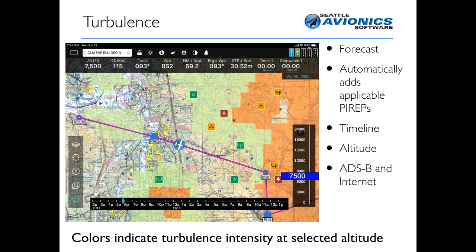Turbulence — especially this time of year — is really important. Turbulence is a forecast product; it's not historical but where turbulence is predicted. You could get this in FlyQ EFB today via static graphics in the weather gallery, but with 4.5 we're doing quite a bit better. Colors indicate the turbulence intensity at the selected altitude. So you move the altitude slider up and down and see the differences — the colors change, showing you where the turbulence is. You'll see that in today's demo.